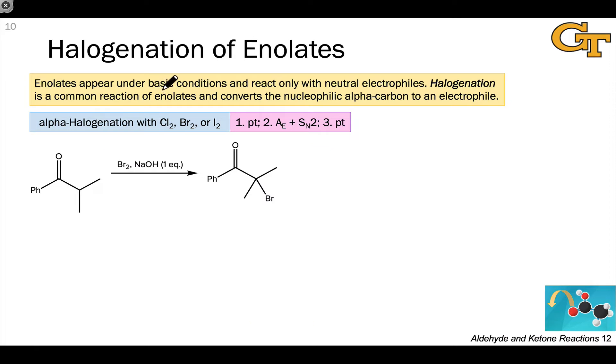When we treat a carbonyl compound with base and an elemental halogen, we end up with an enolate intermediate reacting with X2. Here again, the ultimate result is halogenation through an electrophilic substitution mechanism, but the situation is a little bit different for mechanistic reasons.